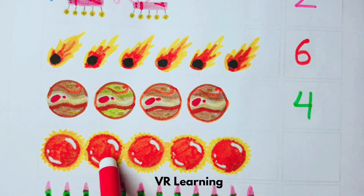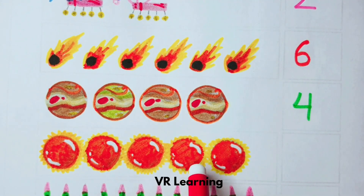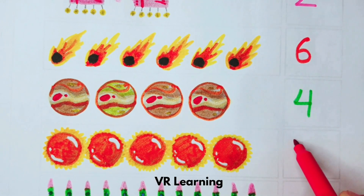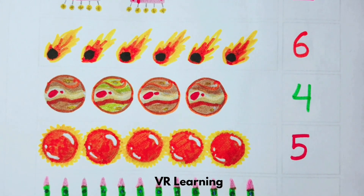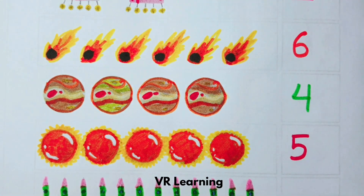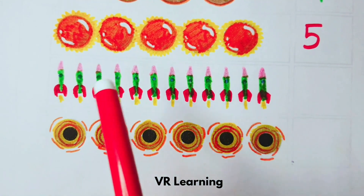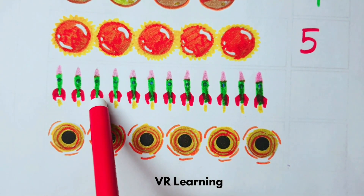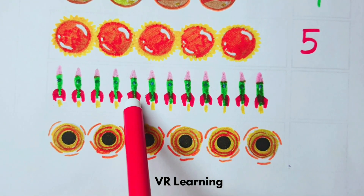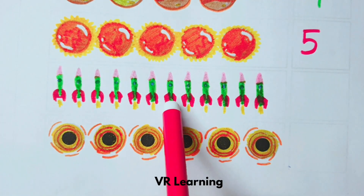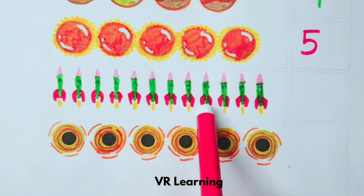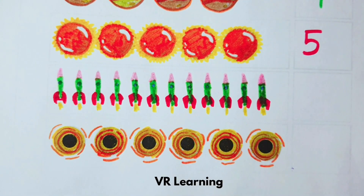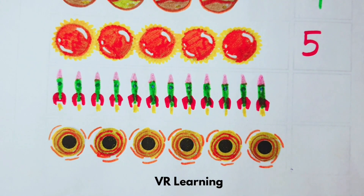One, two, three, four, five. Write the number five in the box. One, two, three, four, five, six, seven, eight, nine, ten, eleven, twelve. Write the number twelve in the box.